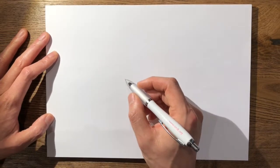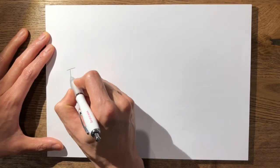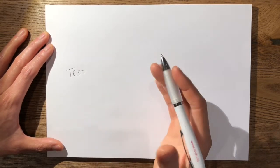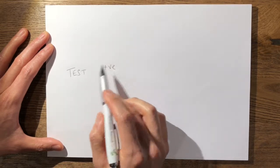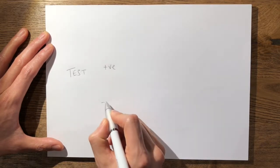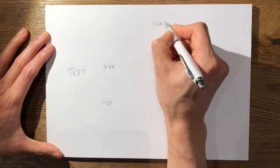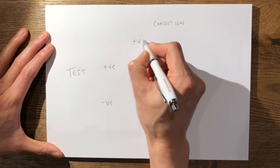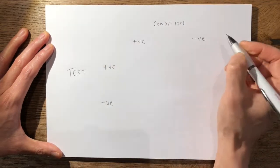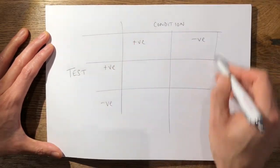Before diving in, you grab the pencil and the page in front of you and start drawing the sensitivity and specificity table. On the left you have your test — in this case the CRP, which could either be positive (greater than 20) or negative (less than 20). Up here you have your condition — the patient can either have the disease or not have the disease. And here you have your 2x2 table.